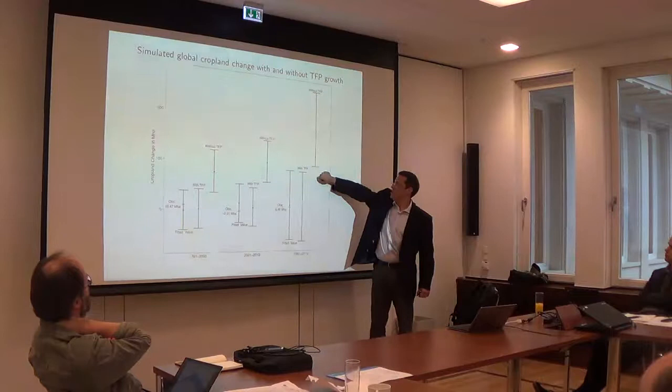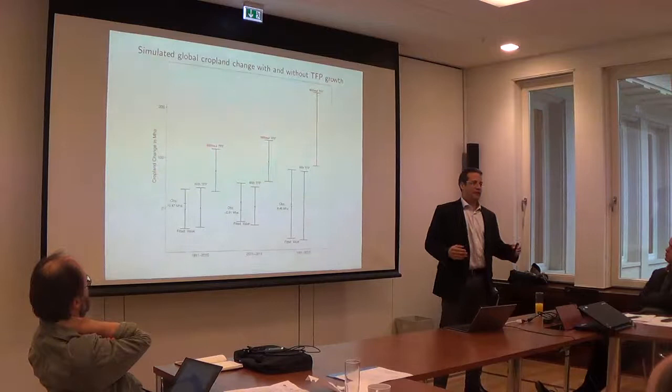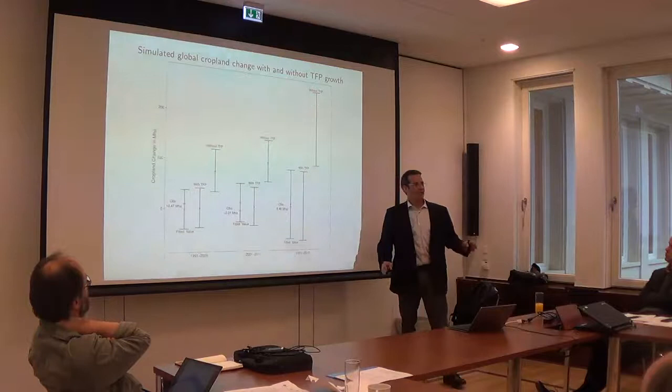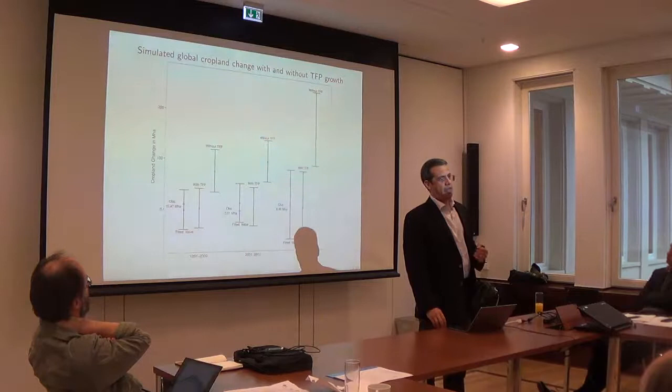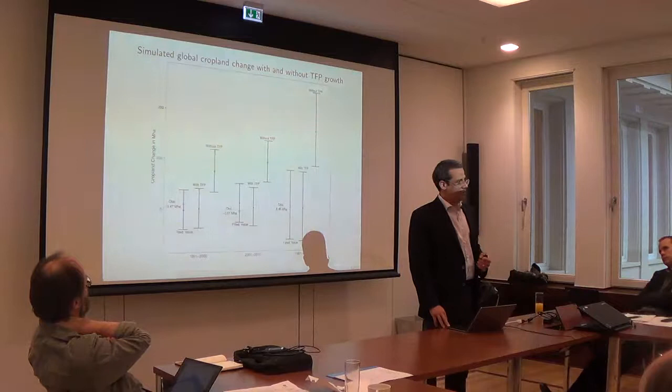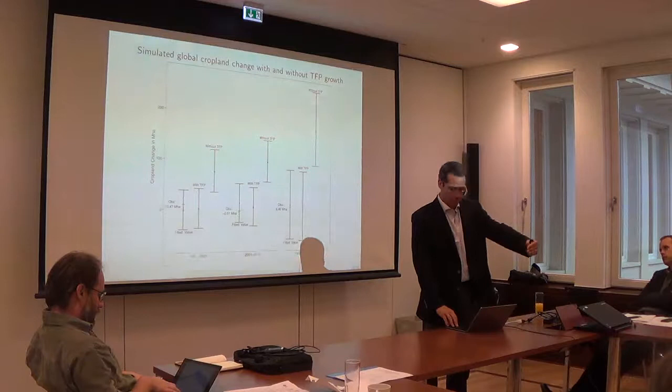So as you can see, the confidence intervals start overlapping each other. We would have used much more land, around 200 million hectares, if we had not had that TFP growth. So this is evidence that TFP growth was a pretty powerful force, basically counteracting the growth in demand. And this happens even though individual countries may have more land use as they improve their technology.